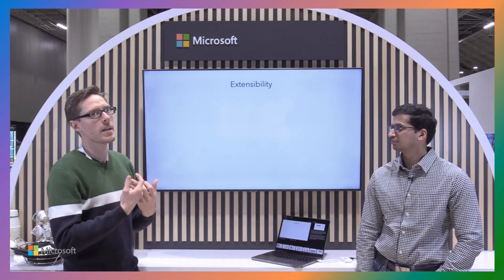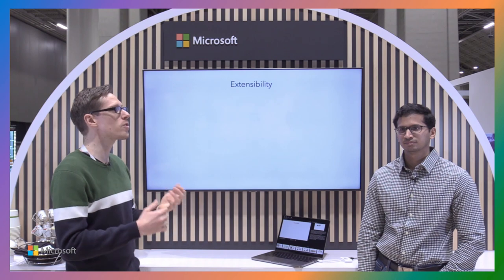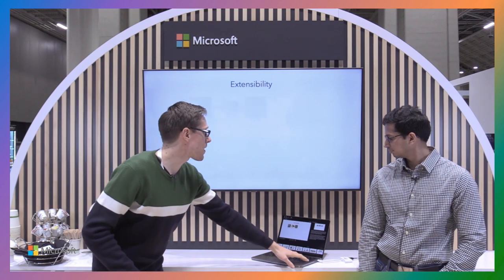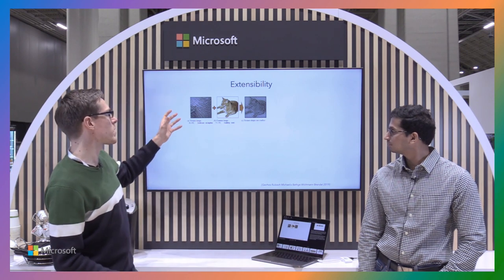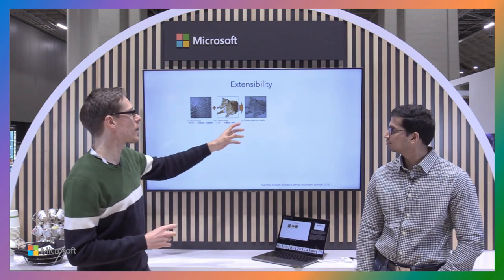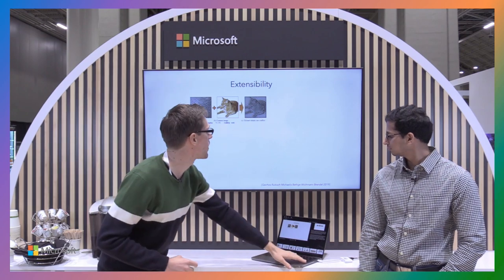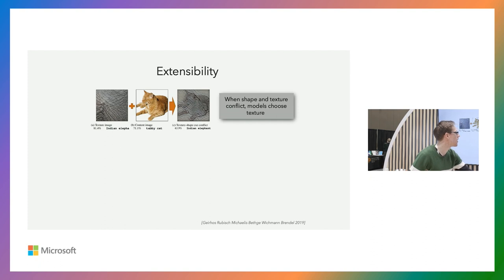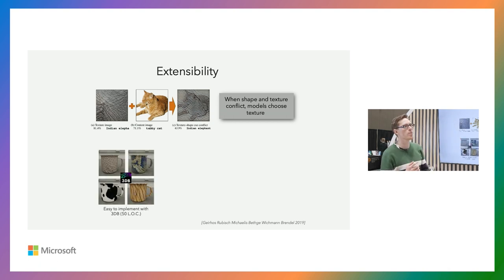We wanted to show again that 3DB can be extensible and also that we can easily reproduce existing research. In the past, Geirhos et al. showed that models, when presented between a confusing mixture of shape and texture, will always rely on texture to make their decision. Here, this weird combination of a cat and the skin of an elephant translates to an elephant prediction, regardless of the shape. We wanted to see if with 3DB we can reproduce these findings but in a way that uses images that are slightly more realistic than this, because as a human you understand it, but it's clearly not a valid image.